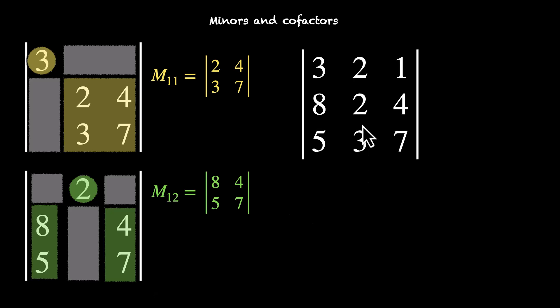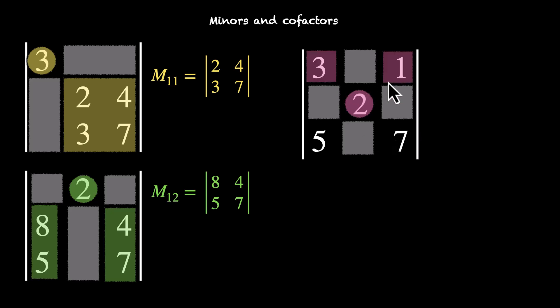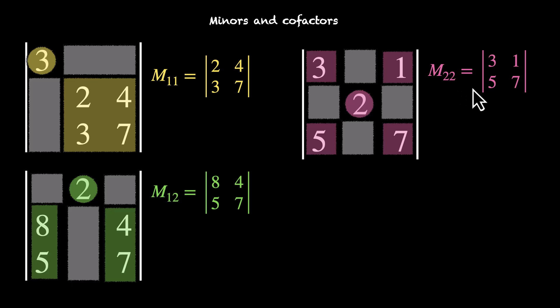Let's find the minor for this element 2. So we ignore 8 and 4 of the second row, and 2 and 3 of the second column. We are left with these four elements: 3, 1, 5, and 7. Together they form a 2x2, and the determinant of that is M22. So M22 is the determinant of 3, 1, 5, 7.